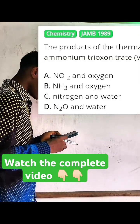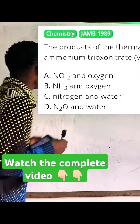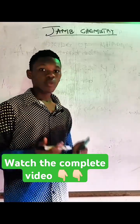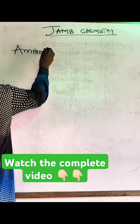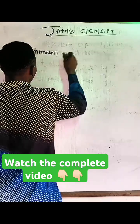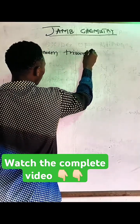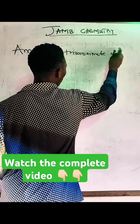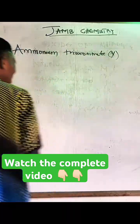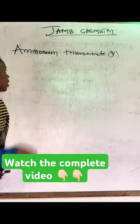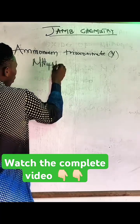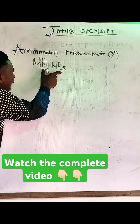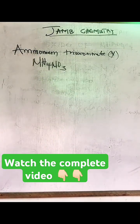The product of thermal decomposition of ammonium triosal nitrate 5 — what is the product when you decompose ammonium triosal nitrate 5? Ammonium triosal nitrate 5 is NH₄NO₃. Do you know that? This is what we call ammonium triosal nitrate 5.